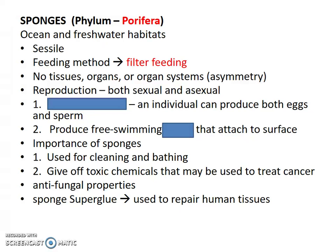Sponges can reproduce both sexually and asexually, and so they are hermaphroditic. You have one sponge that produces both eggs and sperm, and it's just released out into the water. The eggs and the sperm fuse together to form that free swimming zygote — the larva — that then attaches to a surface, and that's when its adult stage is sessile and it doesn't move anymore.